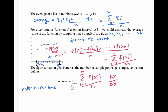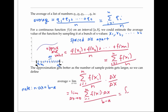Notice that n times delta x is just the length of the interval, b minus a. Now as the number of sample points goes to infinity, delta x — the distance between them — goes to zero. So I can rewrite my limit as the limit as delta x goes to zero of the sum of f(x_i) times delta x, divided by b minus a. The limit of this Riemann sum in the numerator is just the integral from a to b of f(x) dx.